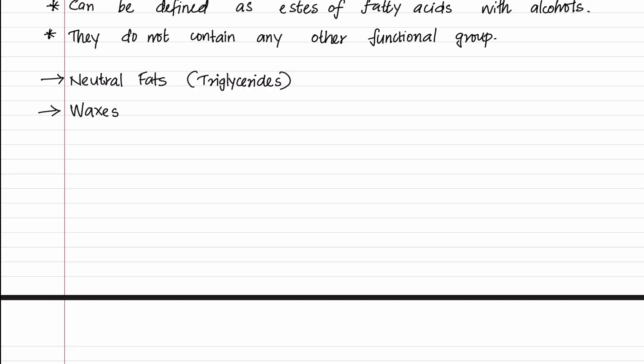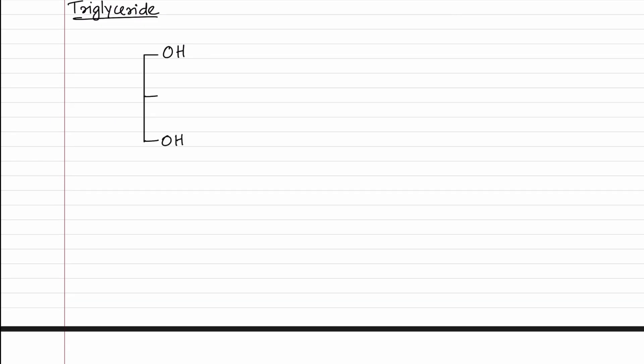Triglycerides, as the name suggests, are composed of one glycerol molecule and three fatty acid chains. Glycerol is a trihydric alcohol, which means that it has three OH groups. There is monohydric, dihydric, and trihydric. So glycerol is a trihydric alcohol.